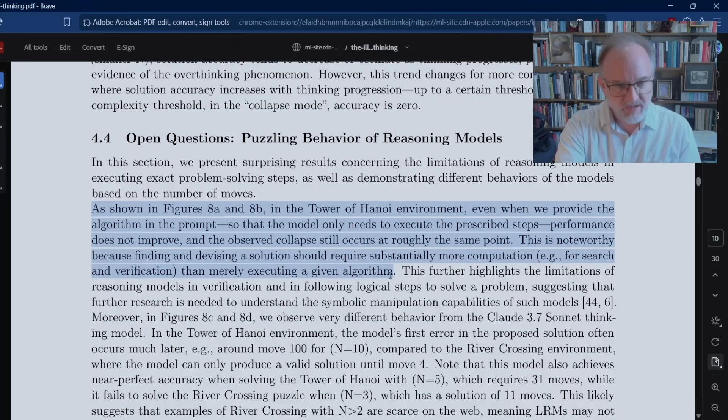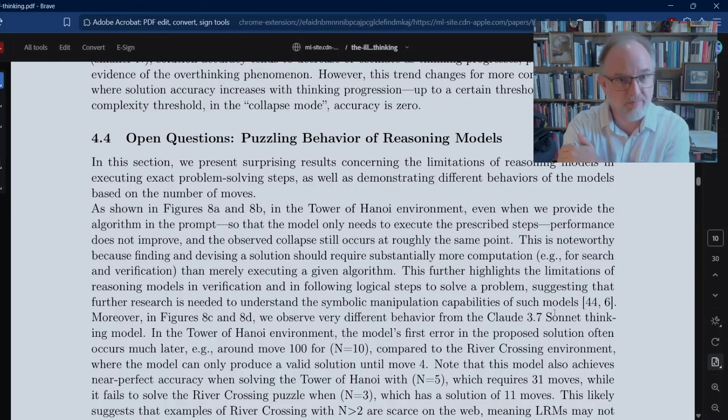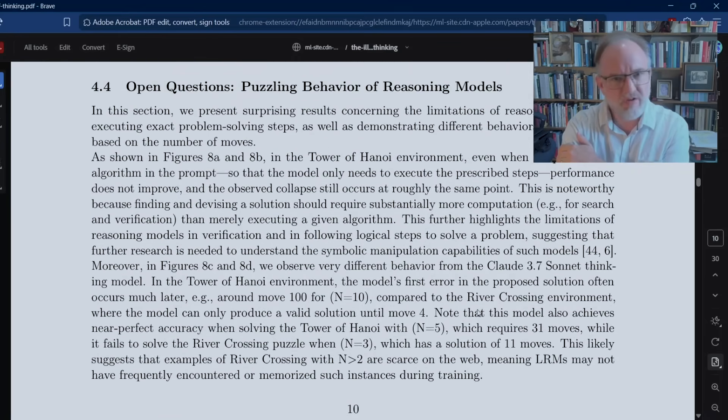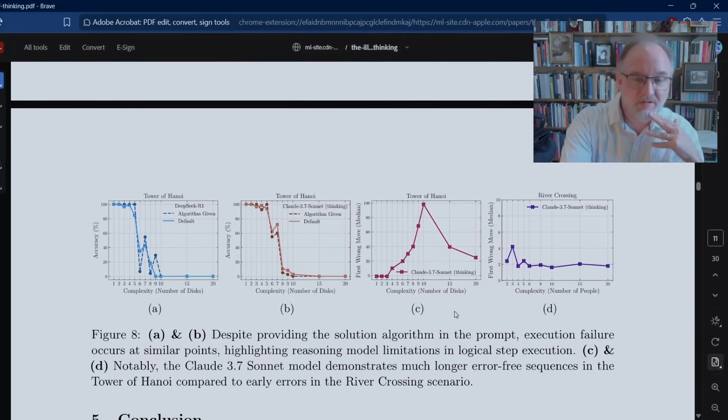This is noteworthy because finding and devising a solution of its own should require more computation than merely executing a given algorithm. And this further highlights the limitations of reasoning models, suggesting that further research is needed. And I think this is the place where, as my friend Zach pointed out, what they've shown here is that the current LLMs and LRMs are not capable of reasoning algorithmically. They're not arriving at that kind of algorithmic knowledge where they get it. They see the logic inherent in the puzzle at every level of complexity. They seem to be able to do it up to a certain point to get the right answers, but they're not actually getting it. They don't have the algorithm. Even when you give them the algorithm, it still puzzles me that that's the case.